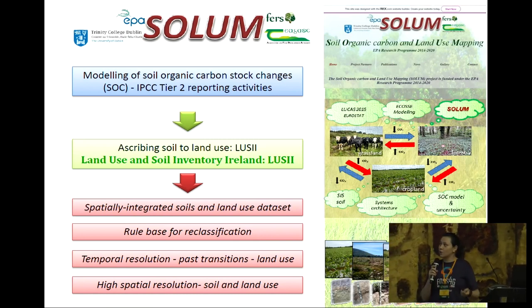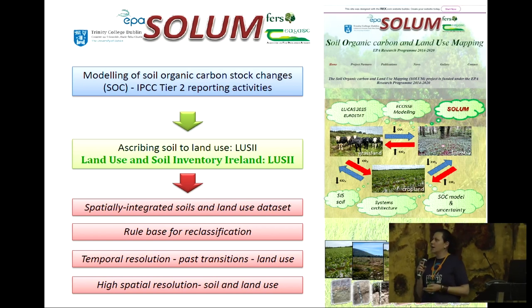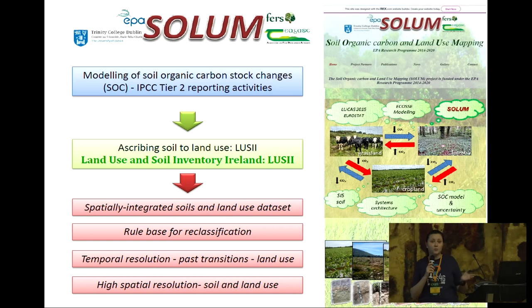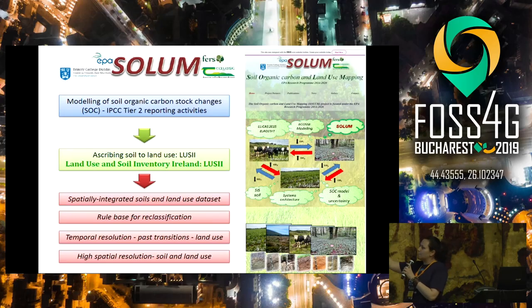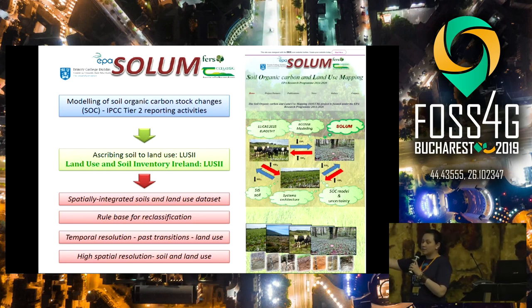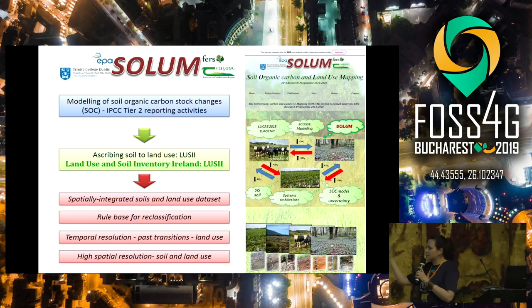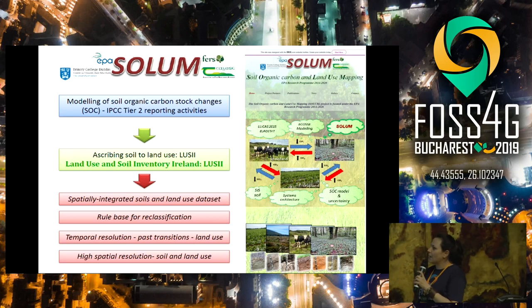It's about modeling of soil organic carbon stock changes for Intergovernmental Panel on Climate Change Tier 2 reporting activities. All the countries that signed the Kyoto Protocol have to report on greenhouse gas emissions and they have to meet the targets for reducing the emissions. You can see here on the right side a brief description of the project — ECOS modeling, Lucas, Aerostat, that's open data, another open data national one, the soil information system. It's about systems architecture, soil organic carbon modeling and uncertainty assessment.